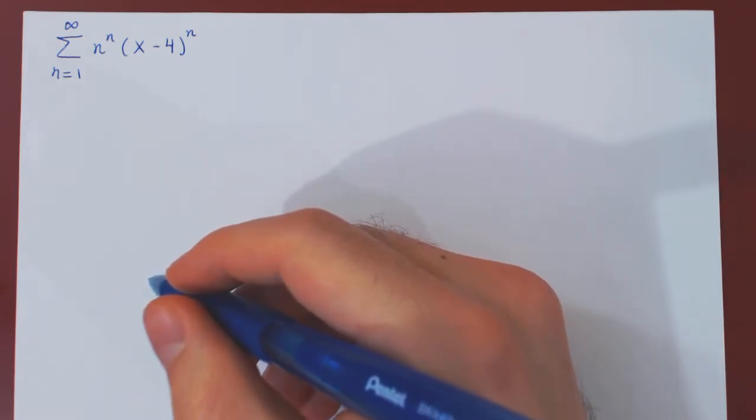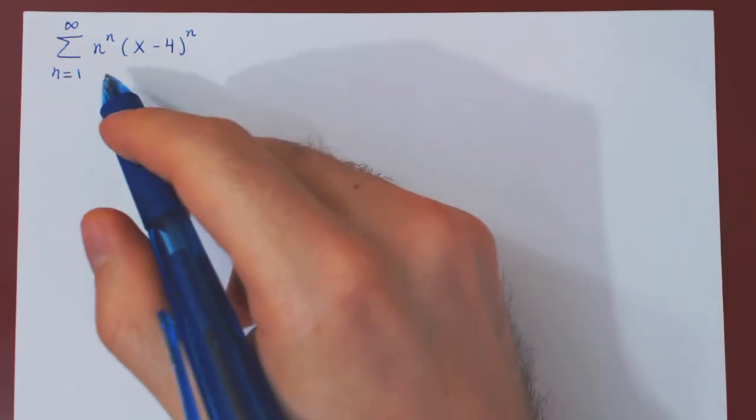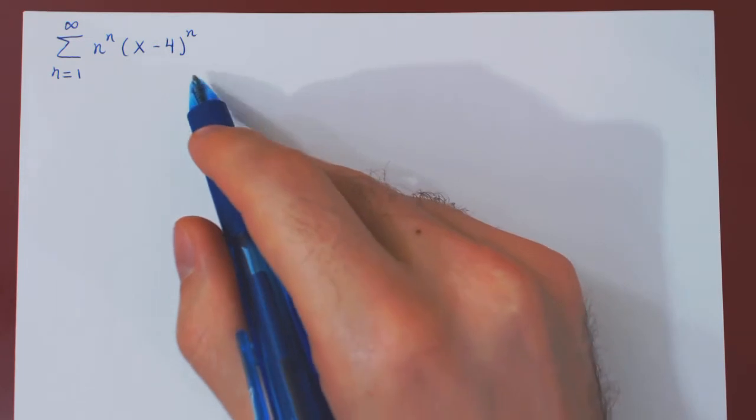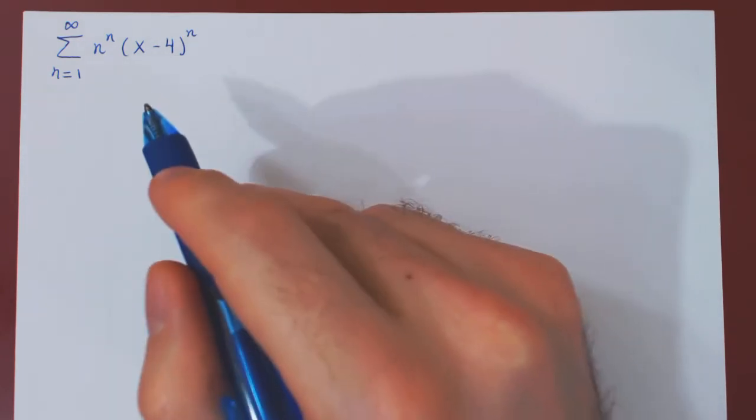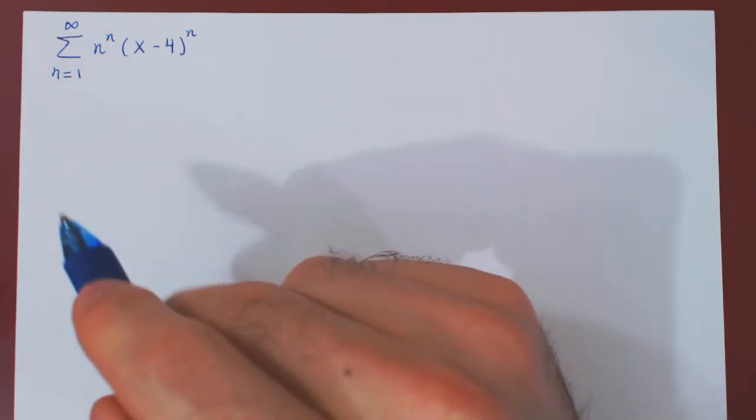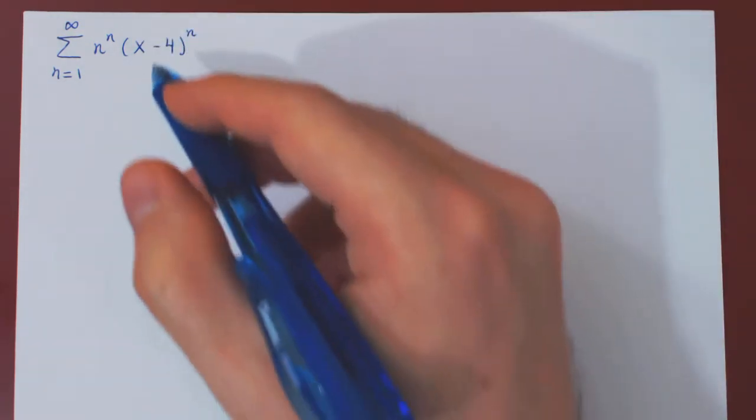Ok, so in this video, we will find all values of x for which the following power series converges. Now, if the previous example was a dream power series, this surely is an example of a nightmare power series. Let's see why.